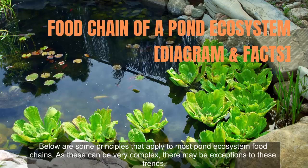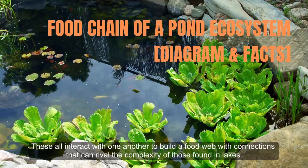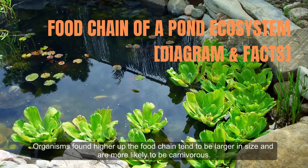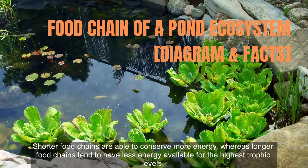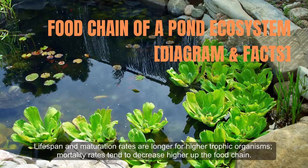Below are some principles that apply to most pond ecosystem food chains. As these can be very complex, there may be exceptions to these trends. Note that large ponds can have not one but multiple food chains particular to their micro habitats, and these all interact to build a food web with connections that can rival the complexity of those found in lakes. Organisms found higher up the food chain tend to be larger in size and more likely to be carnivorous. Shorter food chains are able to conserve more energy, whereas longer food chains tend to have less energy available for the highest trophic levels. Metabolic efficiency does tend to increase up the food chain, however.